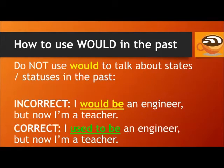Do not use 'would' to talk about states or statuses in the past. For example, don't say: 'I would be an engineer, but now I'm a teacher.' That's incorrect, because being an engineer is a state, not an action. In this case, you need to use 'used to': I used to be an engineer, but now I'm a teacher.